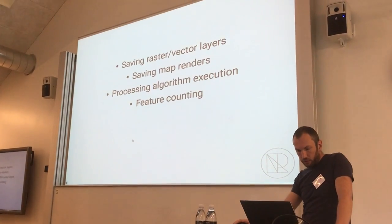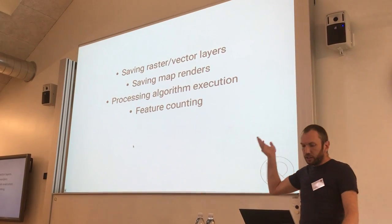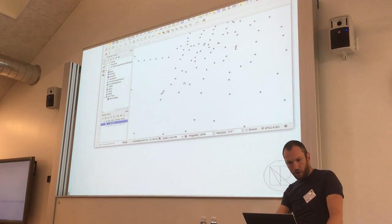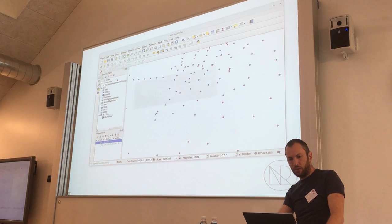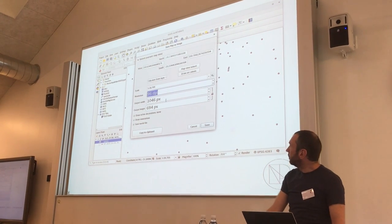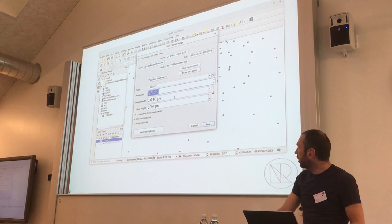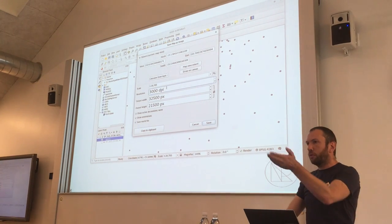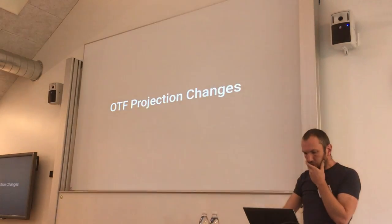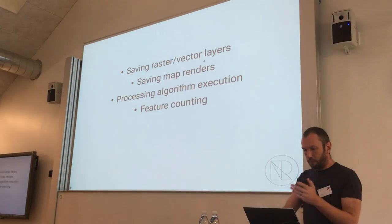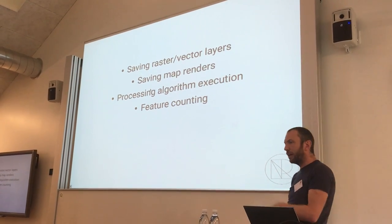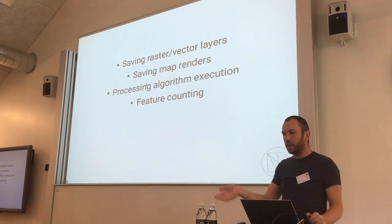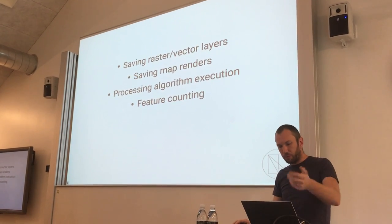Background tasks have been implemented for saving raster and vector layers, and saving map renders. QGIS 3.0 has an option when saving your map as an image where you can put in your DPI - something like 3,000 DPI - and it will run in the background without blocking you. Processing algorithms - when you run a buffer, dissolve, clip, or similar operations - those will also disappear into that little status bar control so you can keep doing other work while they run.